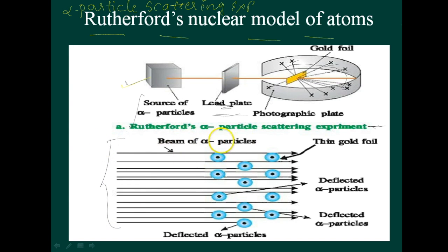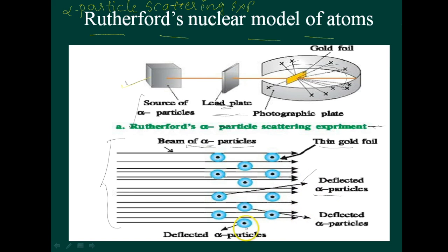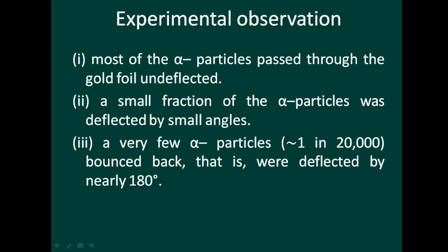Observing the figure, these are the alpha particles, and this is the thin gold foil. Some of the alpha particles are deflected in various directions. Let me explain what we observe from this figure.